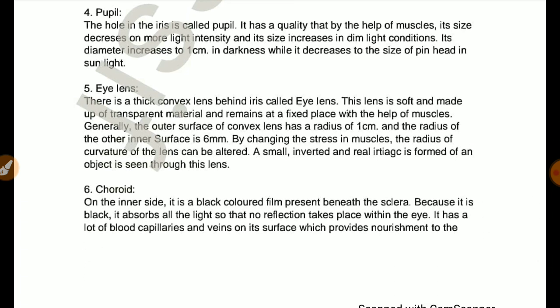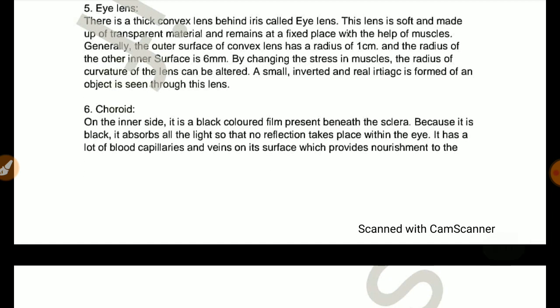This lens is soft and made up of transparent material and remains in fixed place with the help of muscles. Generally, the outer surface of convex lens has a radius of 1 cm and the radius of the other inner surface is 6 mm. By changing the stress of its muscles, the radius of curvature of the lens can be altered. A small inverted and real image is formed of an object seen through this lens.